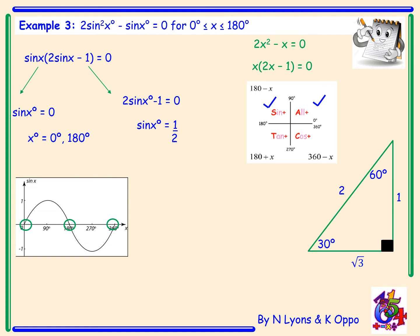Drawing the exact value triangle, we're looking for an angle with opposite 1 and hypotenuse 2, which is 30 degrees. So sin x = 1/2 gives x equals 30 degrees and 180 − 30, which is 150. Finally, we state our full solution: x is 0, 30, 150, or 180 degrees. Always double-check that these lie within the stated range — which they do.